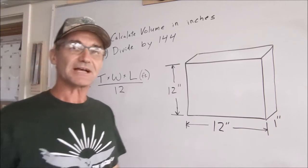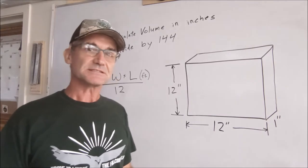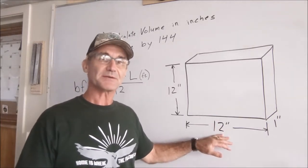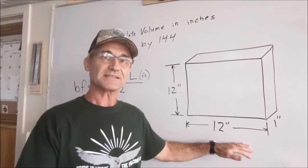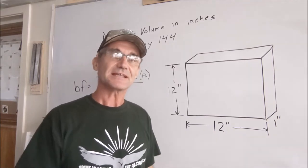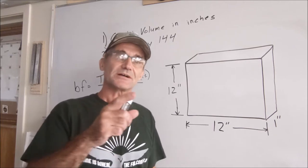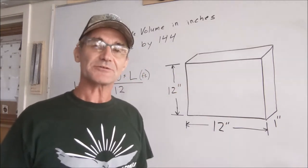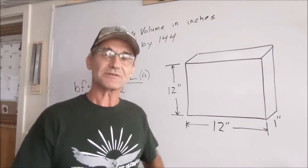So the best way to calculate board feet is to take the length in inches, multiply it by the width in inches, times the thickness in inches. And that'll be your total number of cubic inches, the volume of the board. And then you divide that by 144 and that'll give you board feet.